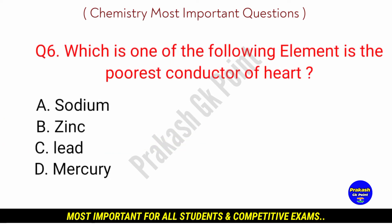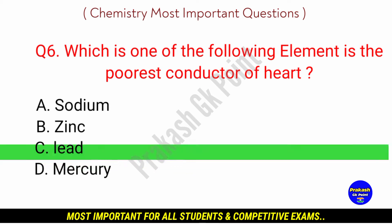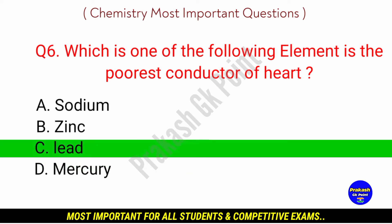Next question: which one of the following elements is the poorest conductor of heat? Answer: option C, Lead.